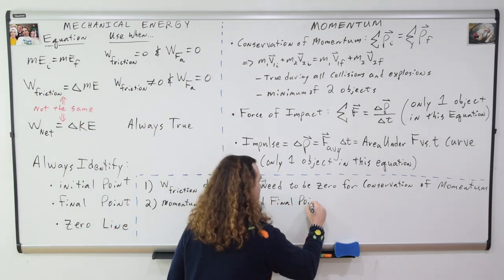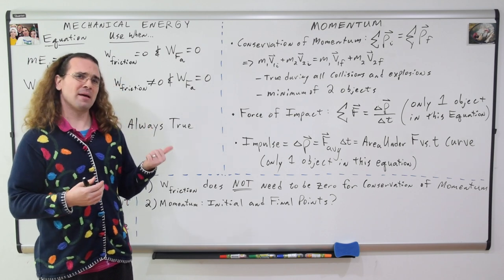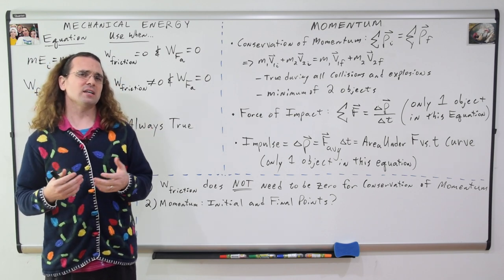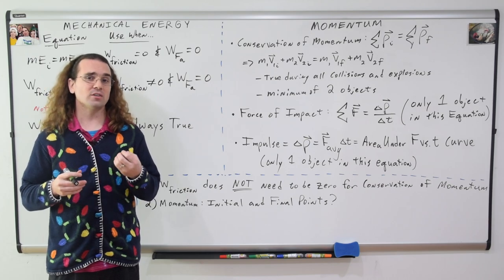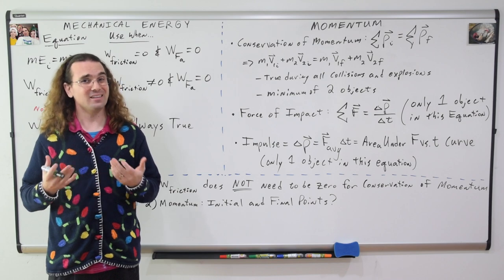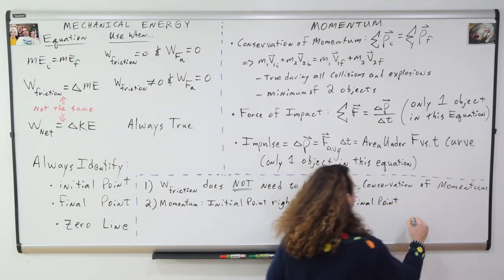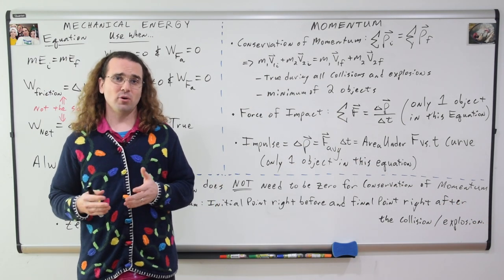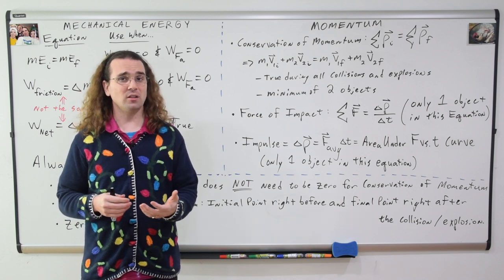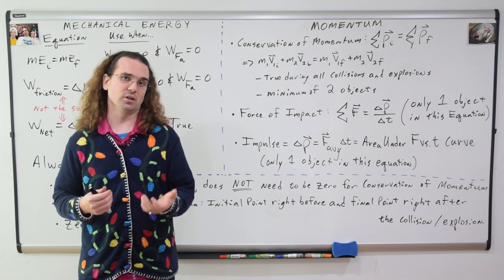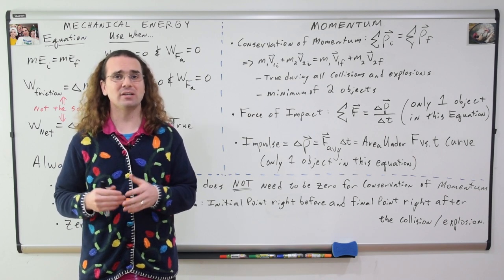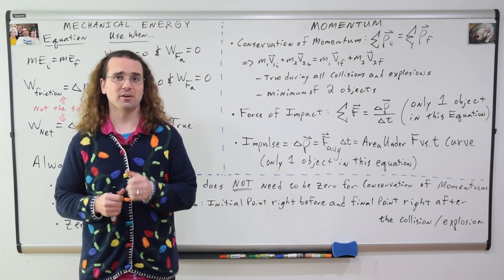Second. Class, when using the momentum equations, have we ever identified where the initial and final points are? No. No. That is because they are always assumed to be identified like this. The initial point is assumed to be right before the collision or explosion, and the final point is assumed to be right after the collision or explosion. So we don't need to identify those initial and final points.